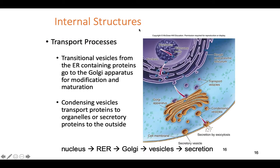To summarize the transport process: the nucleolus makes all the parts for ribosomes, which are assembled and leave the nucleus to bind to the rough ER. The rough ER makes proteins that leave through transport vesicles to the Golgi apparatus. The Golgi modifies those proteins and sends them out wherever they need to go — lipids and waste products to outside the cell, or bringing materials in through endocytosis and processing them.